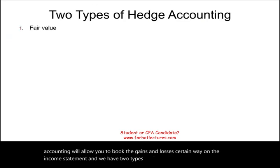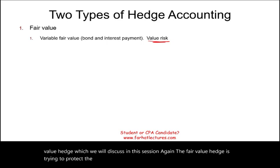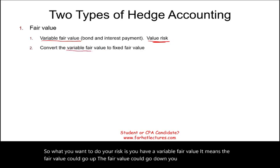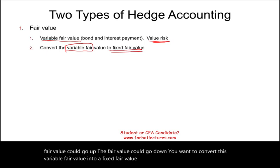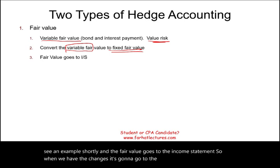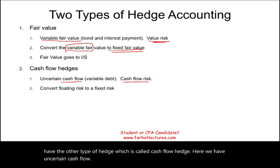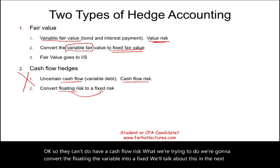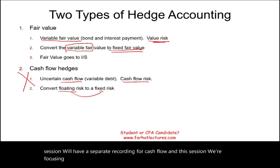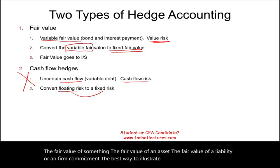Hedge accounting allows you to book gains and losses a certain way on the income statement. We have two types: fair value hedge — protecting the fair value of an asset, liability, or unrecognized firm commitment, converting a variable fair value into a fixed fair value, with changes going to the income statement — and cash flow hedge, where you have uncertain cash flows and convert the variable into a fixed. We'll have a separate recording for cash flow. This session focuses on protecting the fair value.